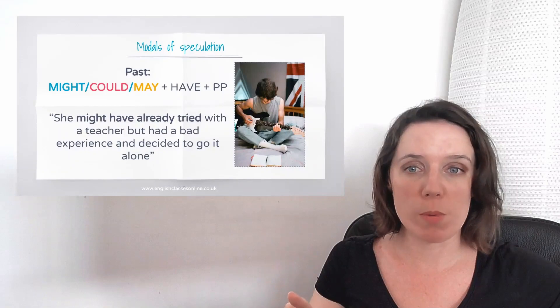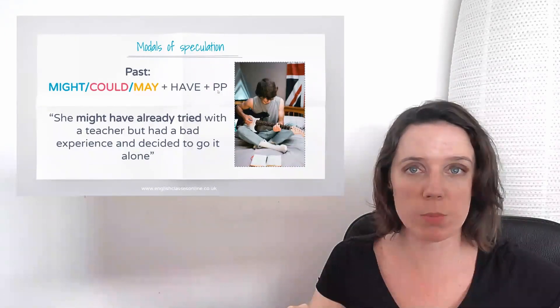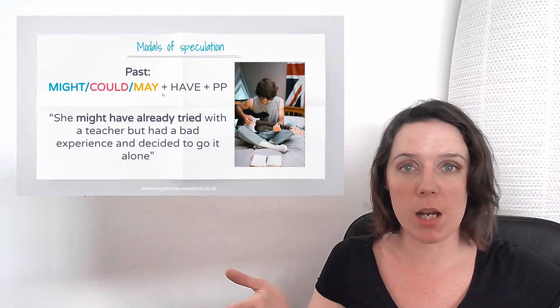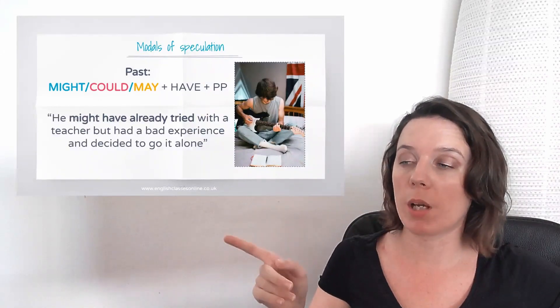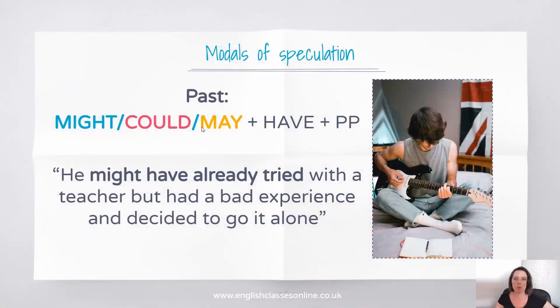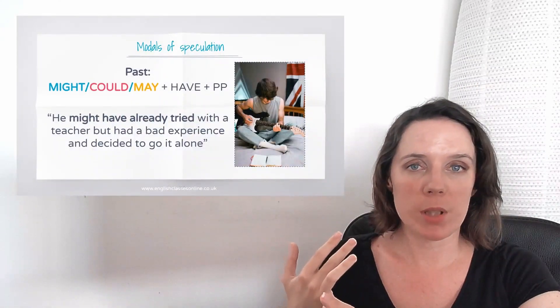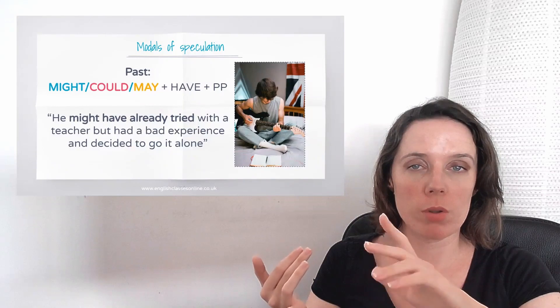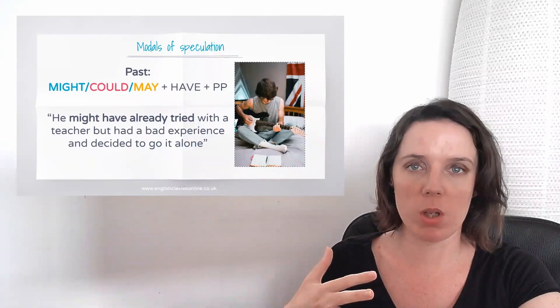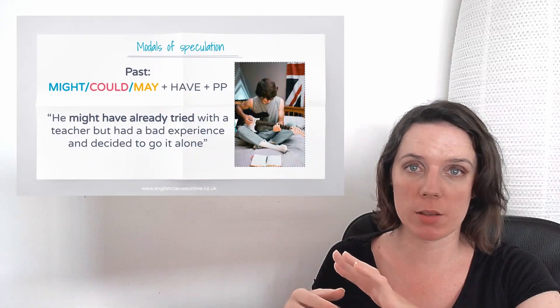So if you want to use the past, again, we use have and a past participle, but if you're not sure, you use might, could, and may. So for example, he might have already tried with a teacher, but had a bad experience and decided to go it alone. So that's our past. He might have, you can use already in there as well, and a past participle. So might have and a past participle, if you're unsure in the past, must have and a past participle, if you're 100% sure in the past.